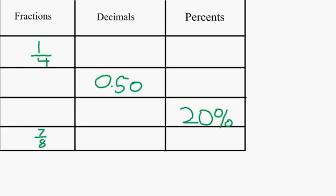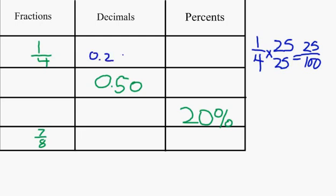The first problem we are doing is one-fourth to a decimal and percent. First, to get a decimal, you would find out if one-fourth can go into one hundred. It can go in twenty-five times. The new fraction is twenty-five hundredths. Then change the fraction to a decimal. Use the numerator and put a decimal point in front of it with a zero. Your decimal is zero point twenty-five.